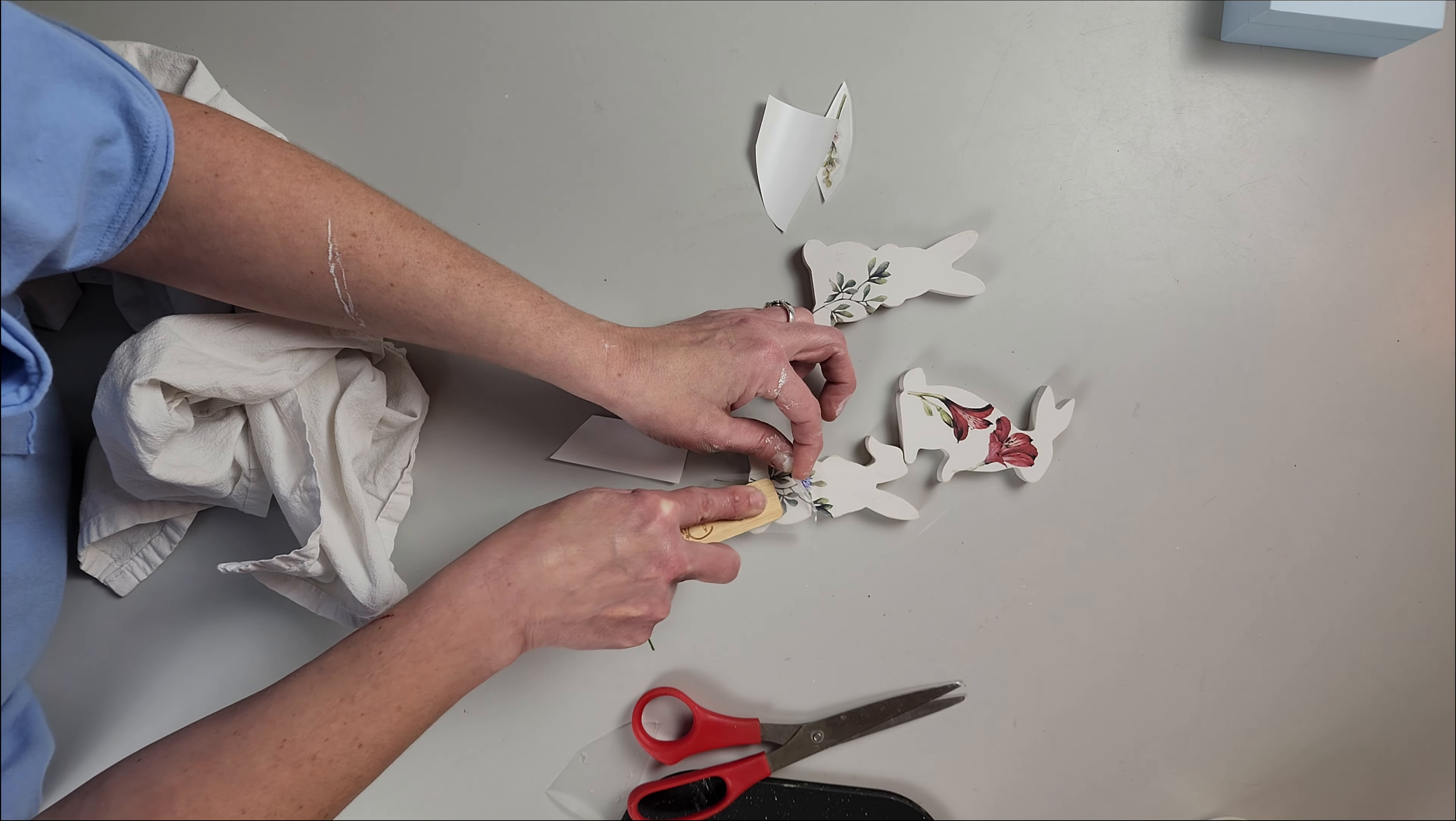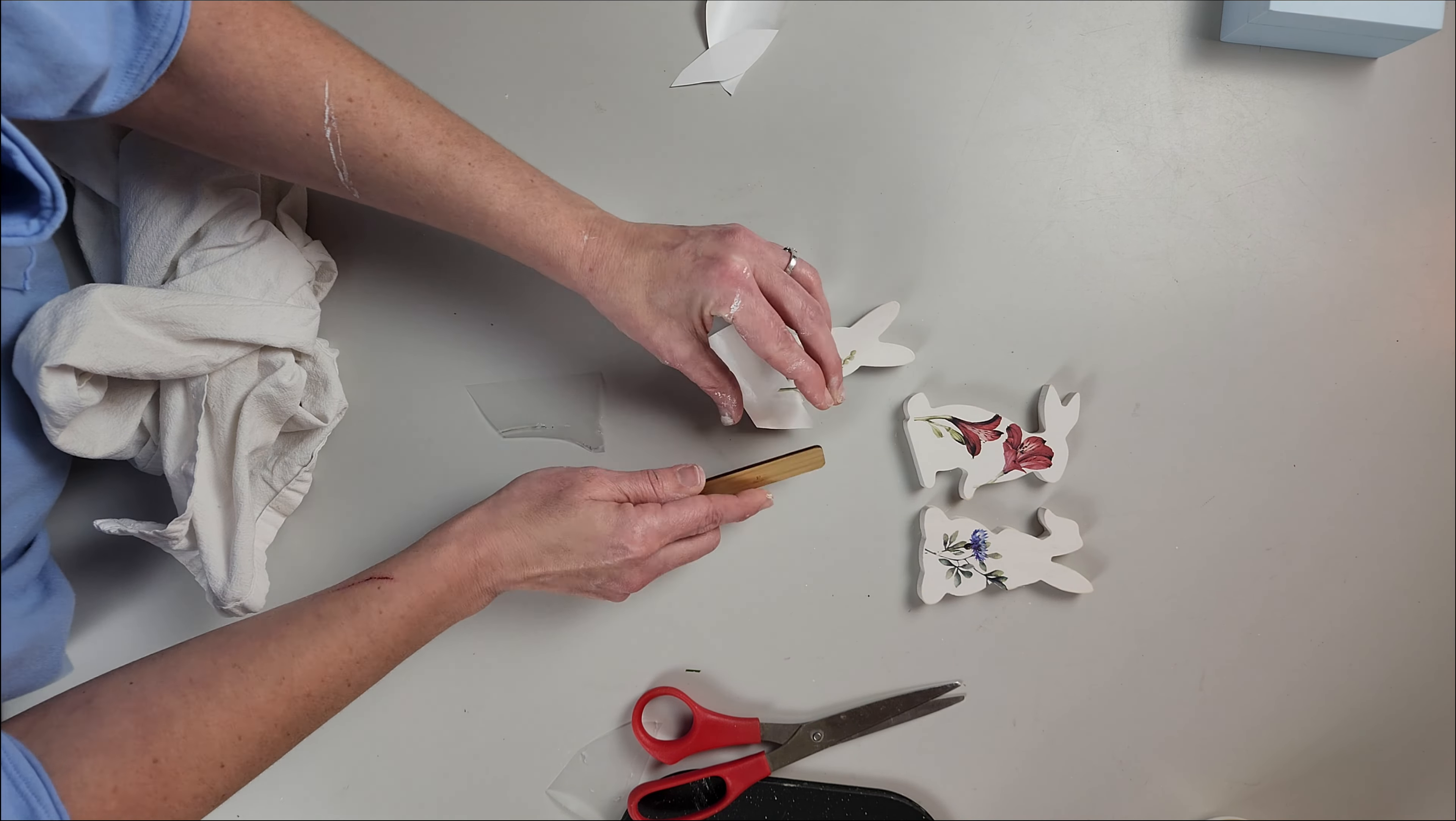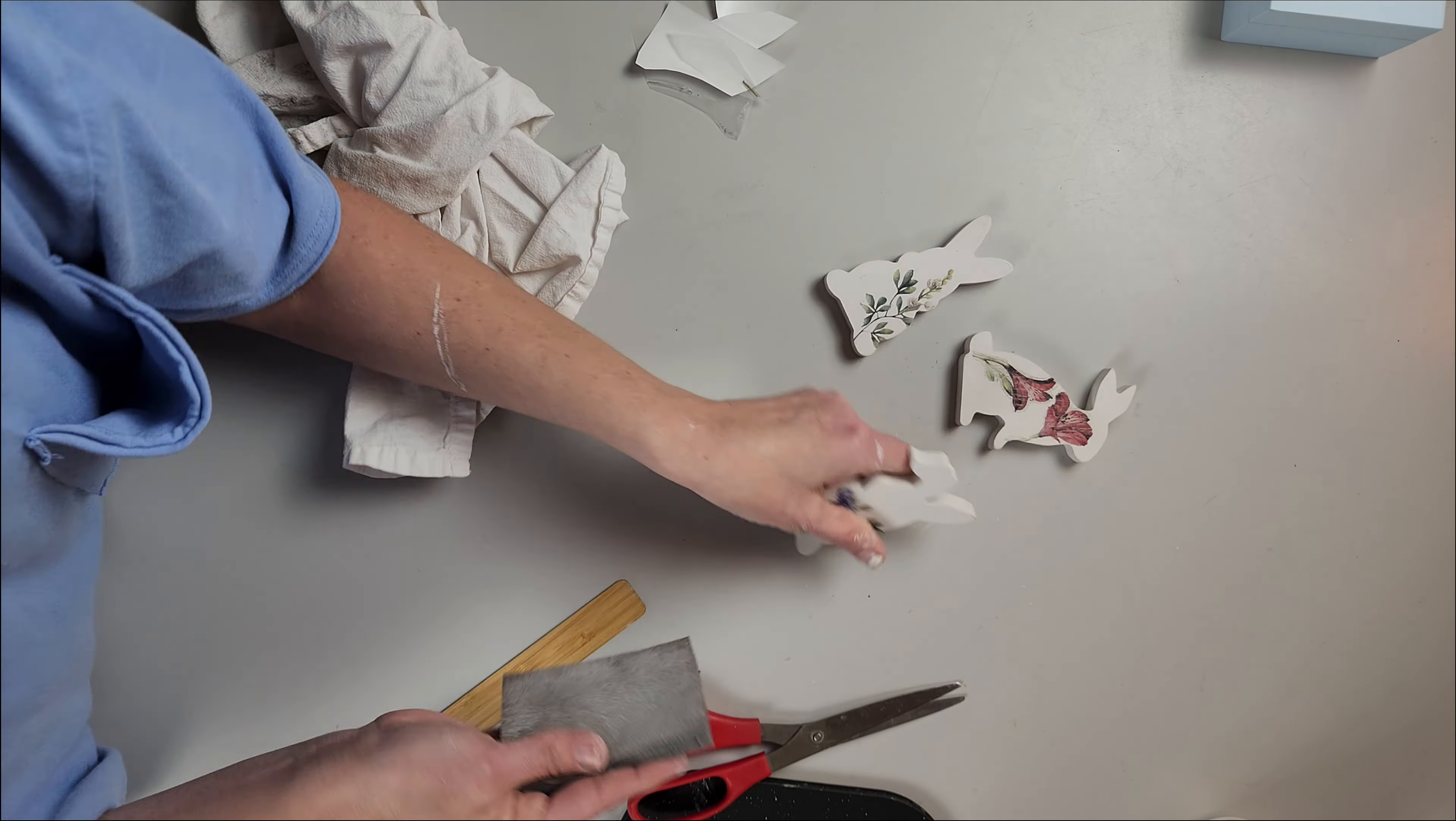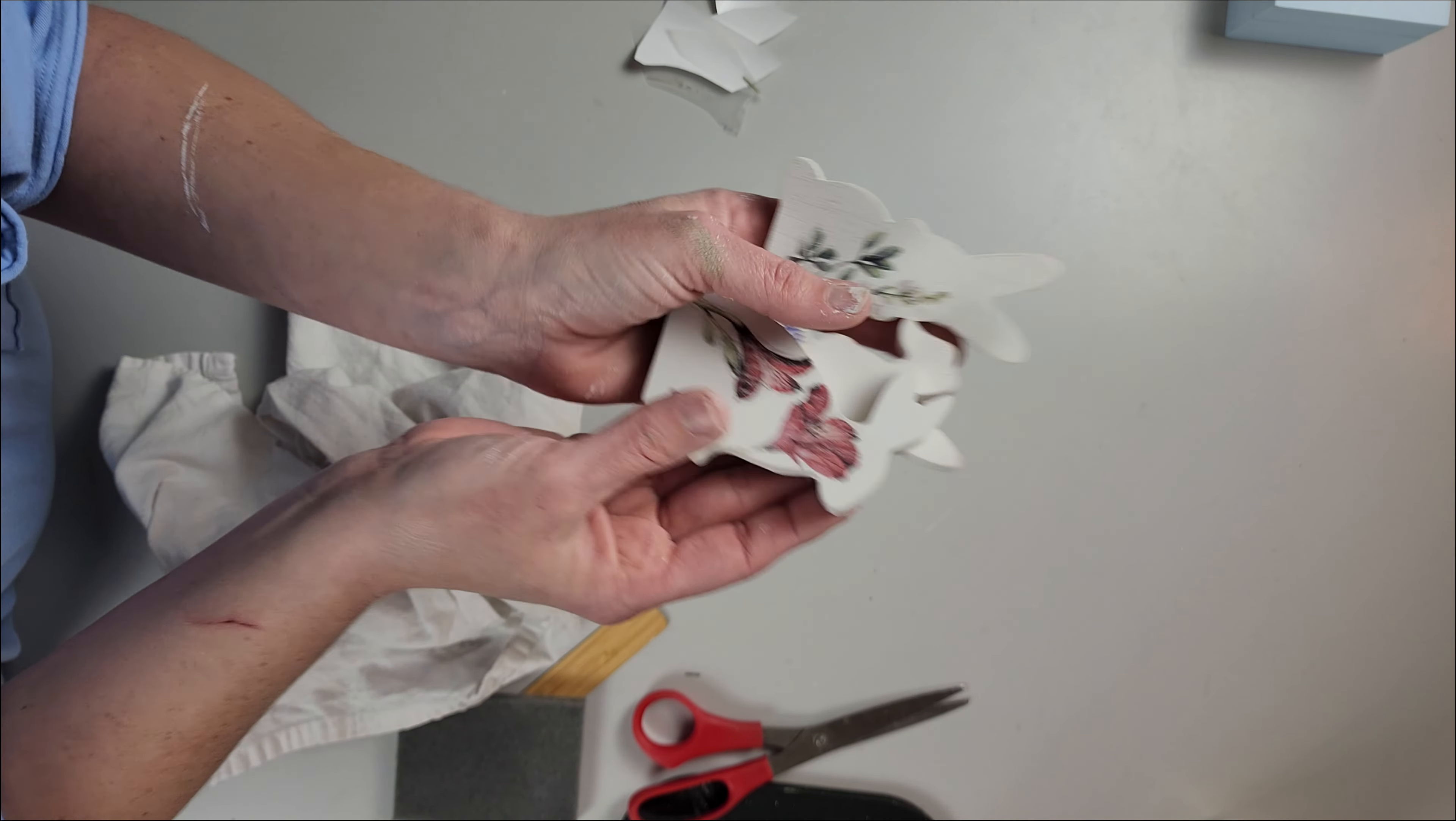Then I like to take a towel and just kind of rub the transfer a little bit more so that I can make sure that it's completely burnished into the piece. Then I take my sand sponge and I just lightly go over it and give it a little bit of distressing. I think these turned out really cute.